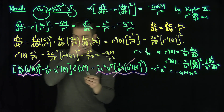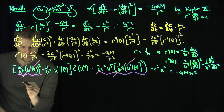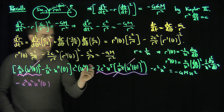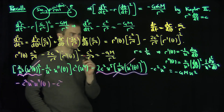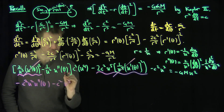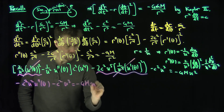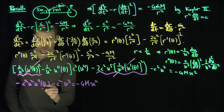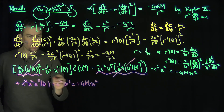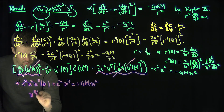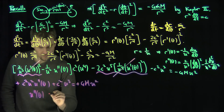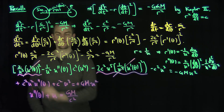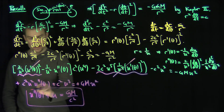What remains simplifies beautifully: we have negative c²u² times u''(θ), minus c²u³, equals negative Gm u squared. Dividing through by negative c² and u squared, we arrive at u''(θ) plus u(θ) equals Gm over c squared. That's a second-order constant-coefficient nonhomogeneous differential equation, which is trivial to solve.